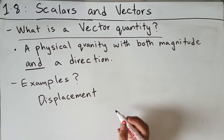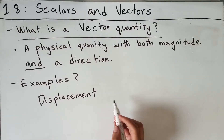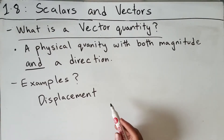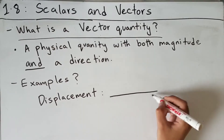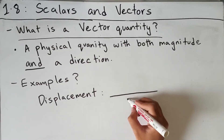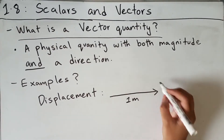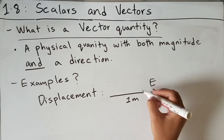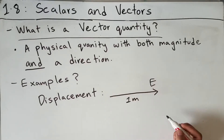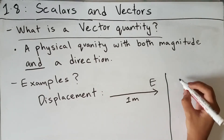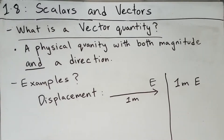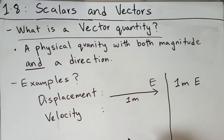Displacement is the distance that an object moves in a specified direction. For example, if you displaced 1 meter towards east, your displacement would be 1 meter east. Another vector quantity is velocity.